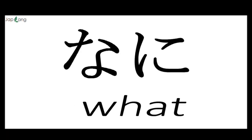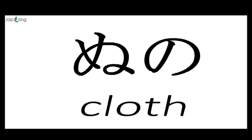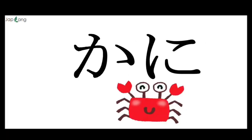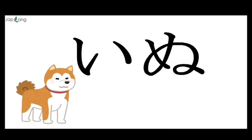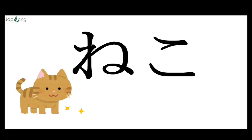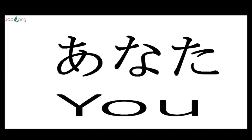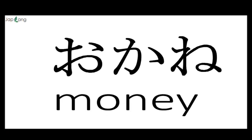NA is number 7. NI — what is it? NU. NO is cloth. SA, KA, NA, SA, KA, NA is fish. KA, NI is crab. E, NU is dog. NE, KO is cat. TA, NA is shelf. A, NA, TA — Anata means YOU. O, KA, NE — Okane means money.